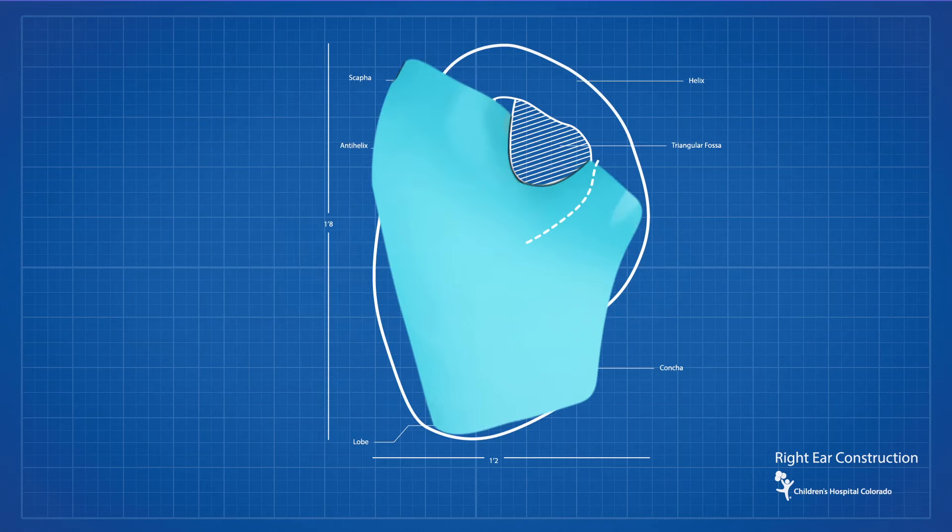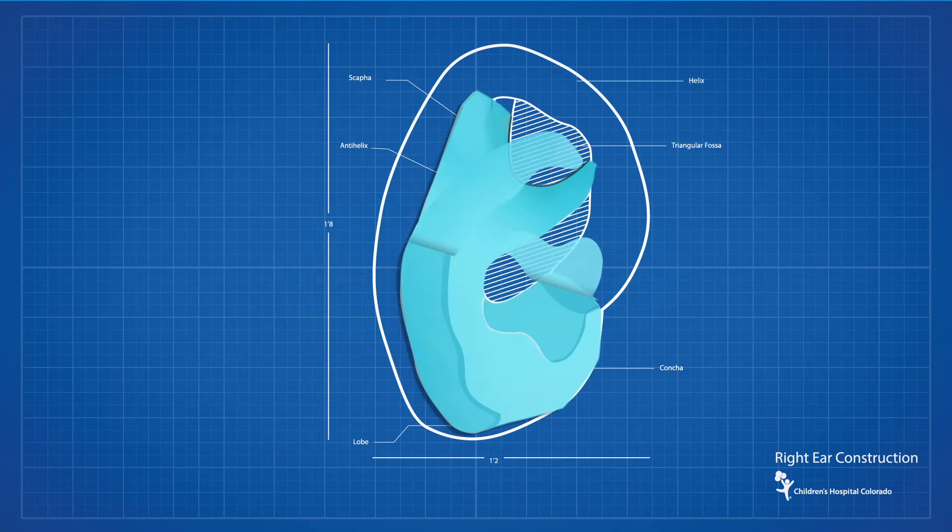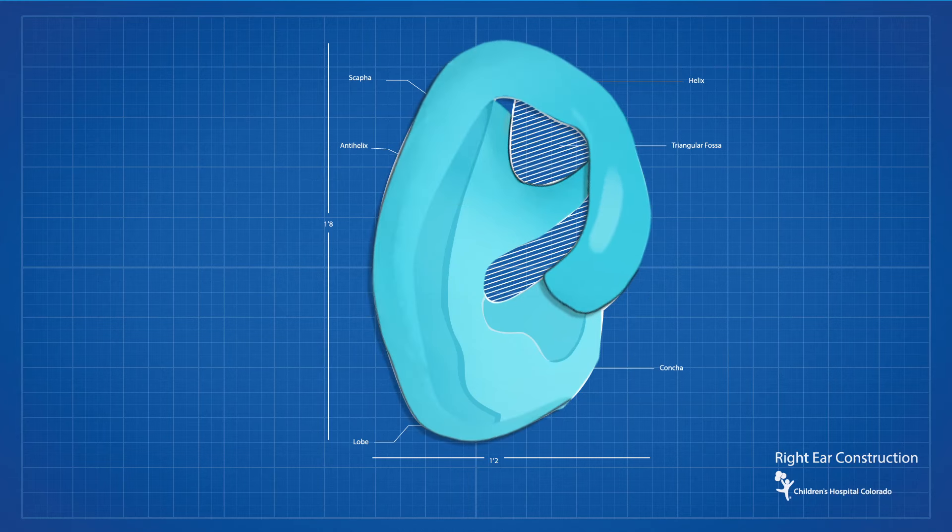The surgeon carefully sculpts and joins the pieces of cartilage to form the ear. By using your child's own body tissue, the new ear will grow with the rest of the body.